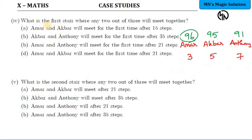Question number four - what is the first stair where any two out of the three will meet together? Which combination has the least LCM? Three and five are the least numbers. So LCM of three and five is going to be fifteen. So fifteenth step, first Amar and Akbar will meet. So least number of step is fifteen steps. Amar and Akbar will meet for the first time after fifteen steps.